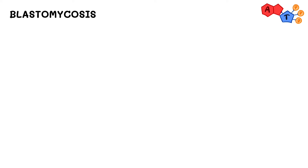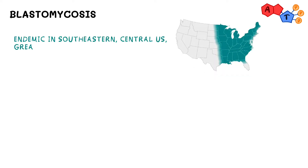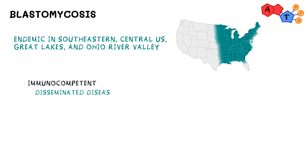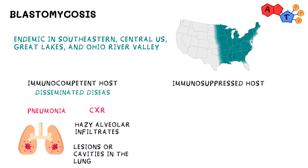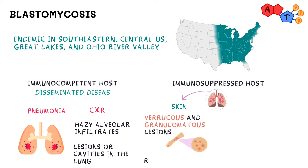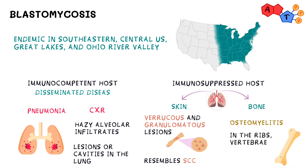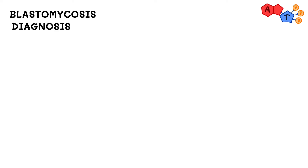Next is blastomycosis. These fungi are endemic to the southeastern and central US, the Great Lakes, and the Ohio River Valley. Unlike other systemic fungi, blastomycosis can cause disseminated disease in immunocompetent hosts. Most patients present with pneumonia — appearing on chest X-ray as hazy alveolar infiltrates or cavities. In an immunosuppressed patient, it can disseminate to the skin, presenting with verrucous and granulomatous lesions resembling squamous cell carcinoma. It can also spread to bone causing osteomyelitis, most commonly in the ribs, vertebrae, and long bones.